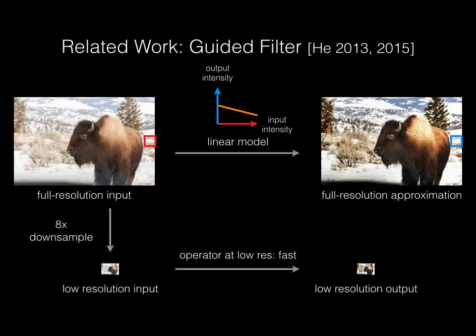Now because these line parameters vary smoothly, they can be estimated at low-resolution, then applied to the full-resolution input to approximate a full-resolution output. Bilateral guided upsampling is a generalization of both joint bilateral upsampling and guided filtering, combining the edge-aware properties of the joint bilateral filter with the speed and expressiveness of a local linear model.